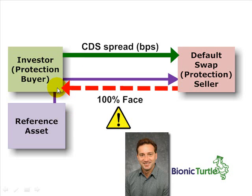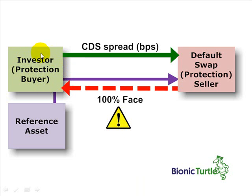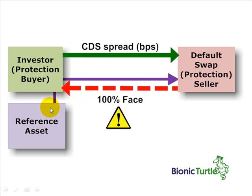With the plain vanilla credit default swap, we have a protection buyer who pays insurance premiums — the CDS spread — as guaranteed payments, typically quarterly, to the swap seller. In exchange, the seller provides a contingent payoff: if there is a credit event trigger, the protection buyer is made whole. In this example, the buyer delivers the physically defaulted asset or bond to the seller in exchange for the full face value.